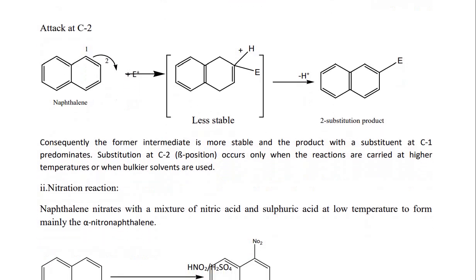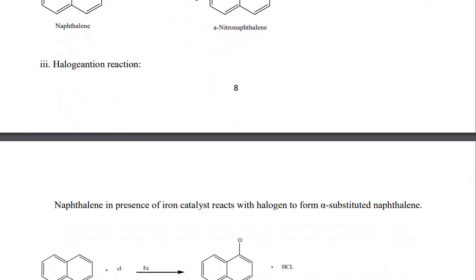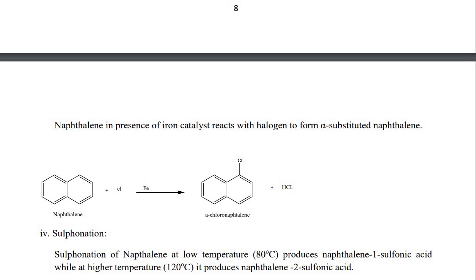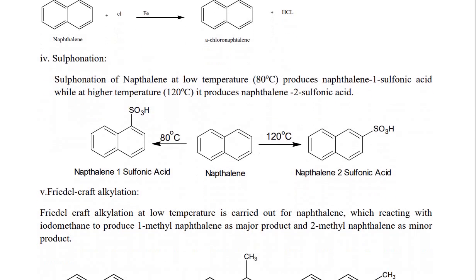Nitration: naphthalene nitrates with a mixture of nitric acid and sulfuric acid at low temperature to form mainly alpha-nitronaphthalene. Halogenation: naphthalene in the presence of an iron catalyst reacts with halogens to form alpha-substituted naphthalene; for example, with Cl2 it gives alpha-chloronaphthalene. Sulfonation: sulfonation of naphthalene at low temperature (around 80°C) produces naphthalene-1-sulfonic acid, while at higher temperature (around 160°C) it produces naphthalene-2-sulfonic acid.